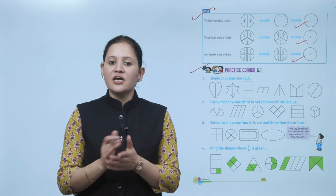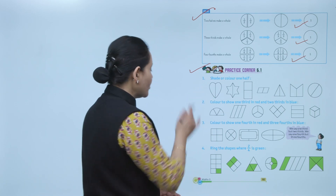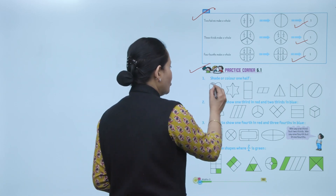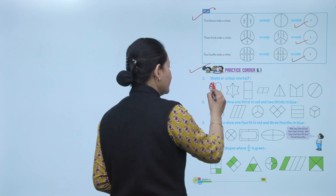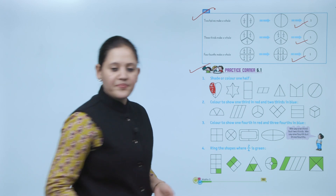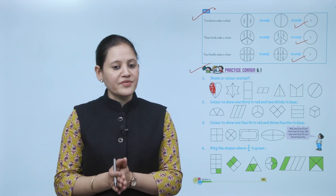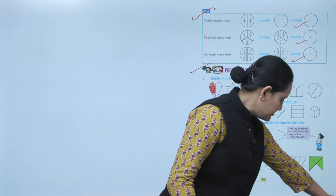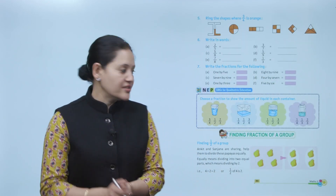Next, practice corner 6.1: shade or colour 1 half. Here the figure is divided into 2 equal parts, so each part represents 1 by 2. You can colour any half. You have to practice all the questions of this exercise. Next we move to the next topic.